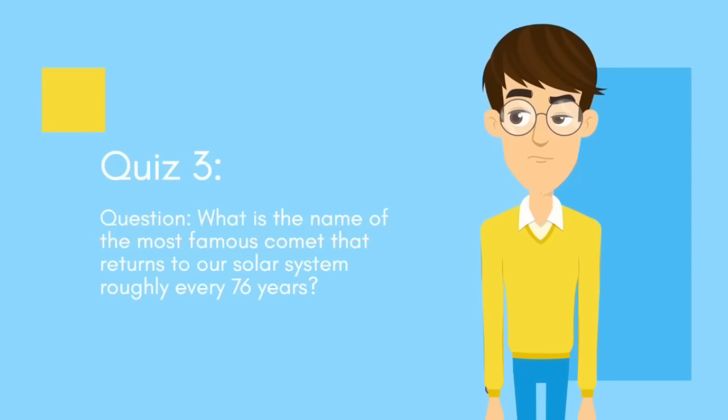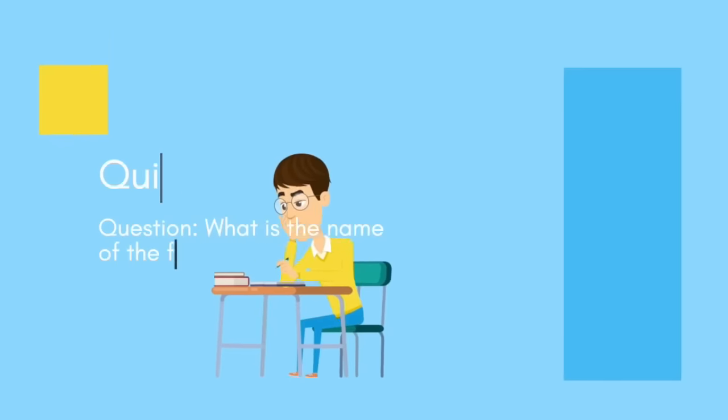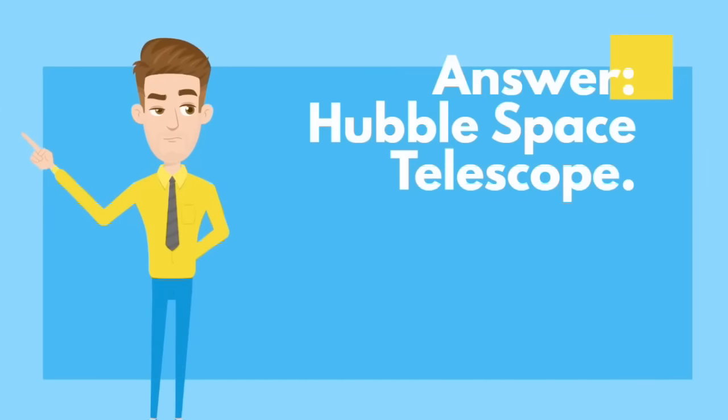name of the most famous comet that returns to our solar system roughly every 76 years? Answer: Halley's Comet. Question 4: What is the name of the first space telescope launched by NASA in 1990? Answer: Hubble Space Telescope.